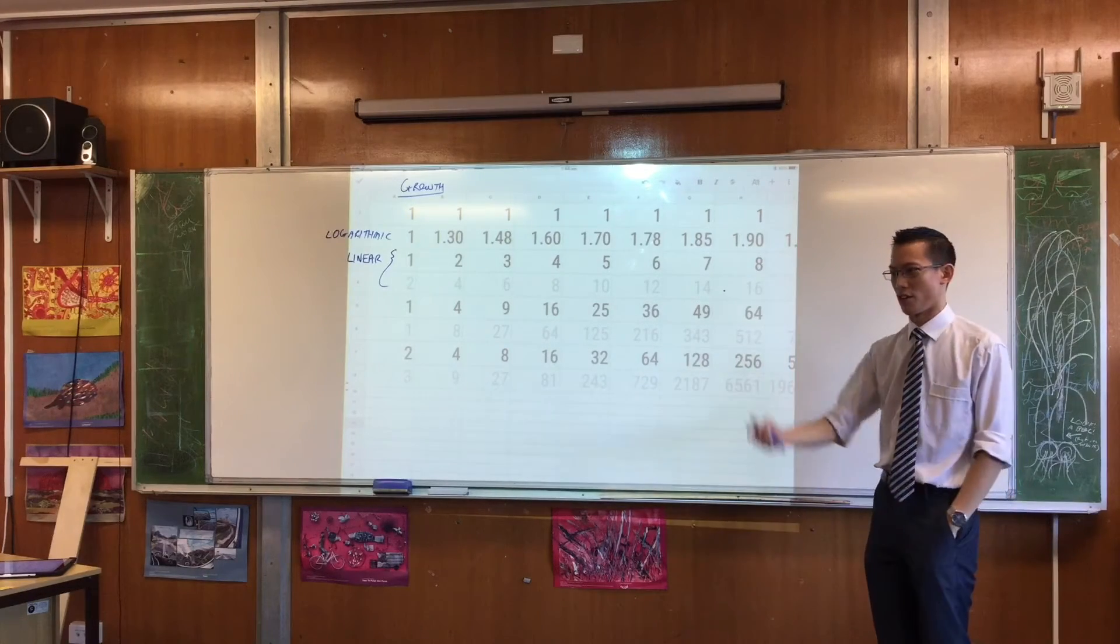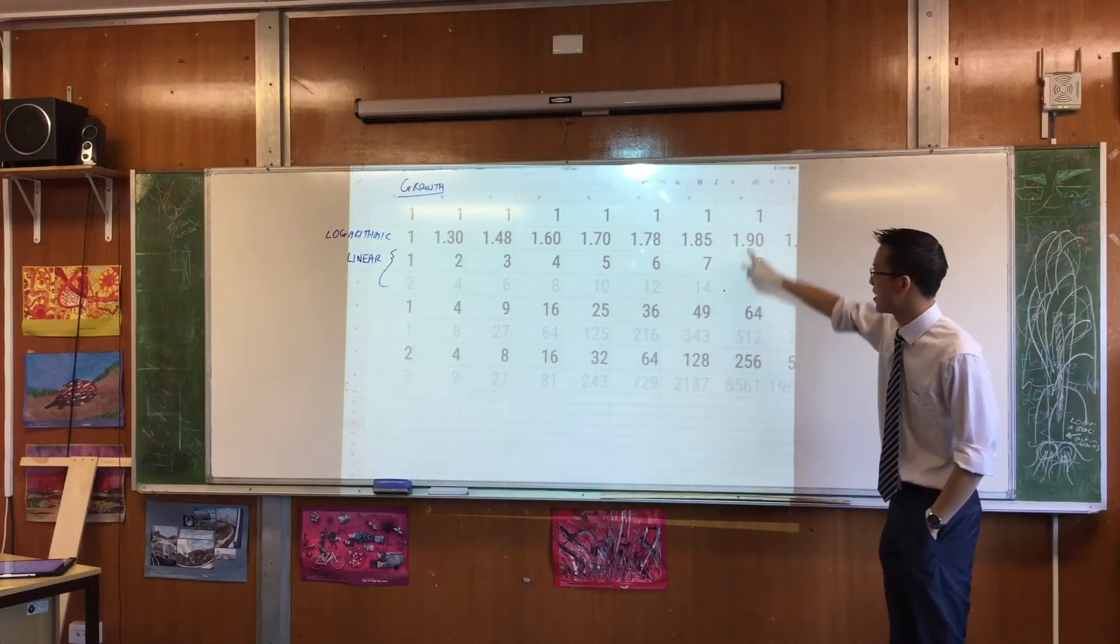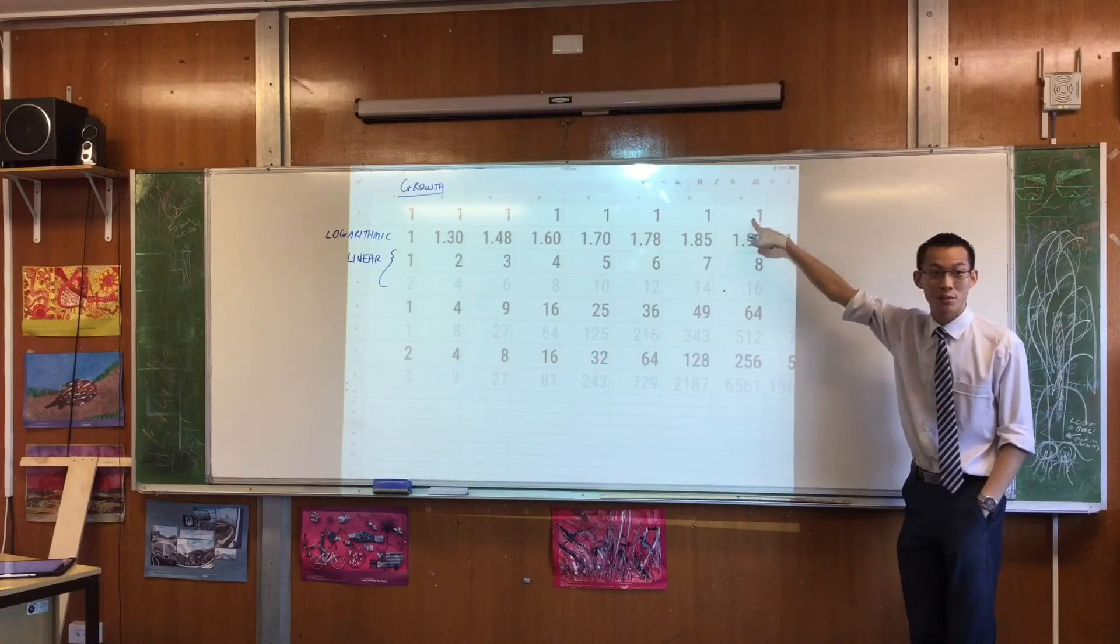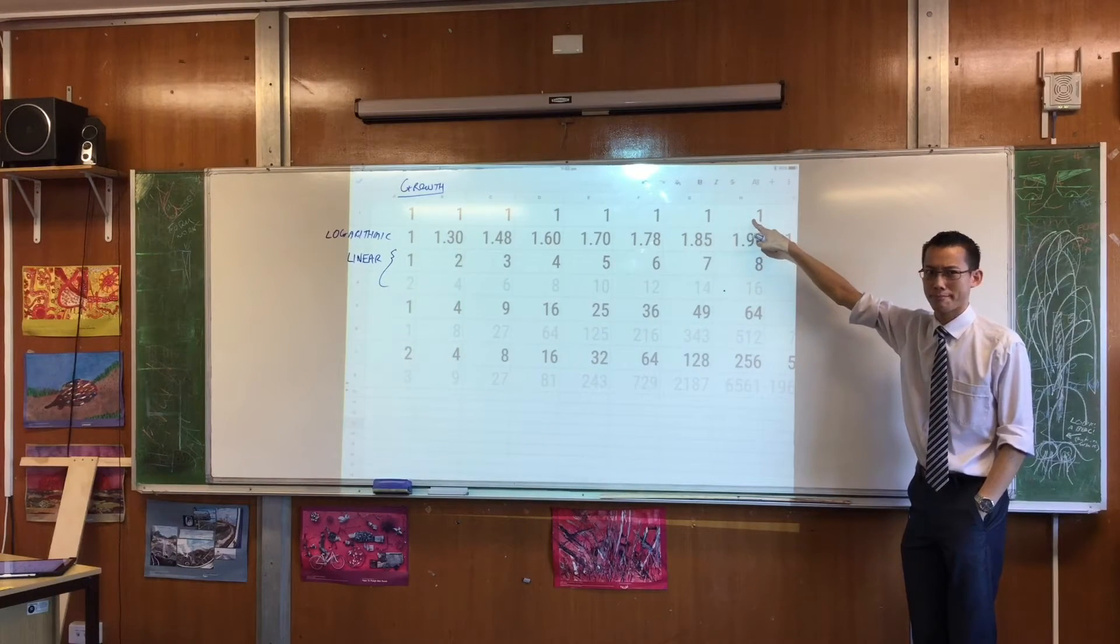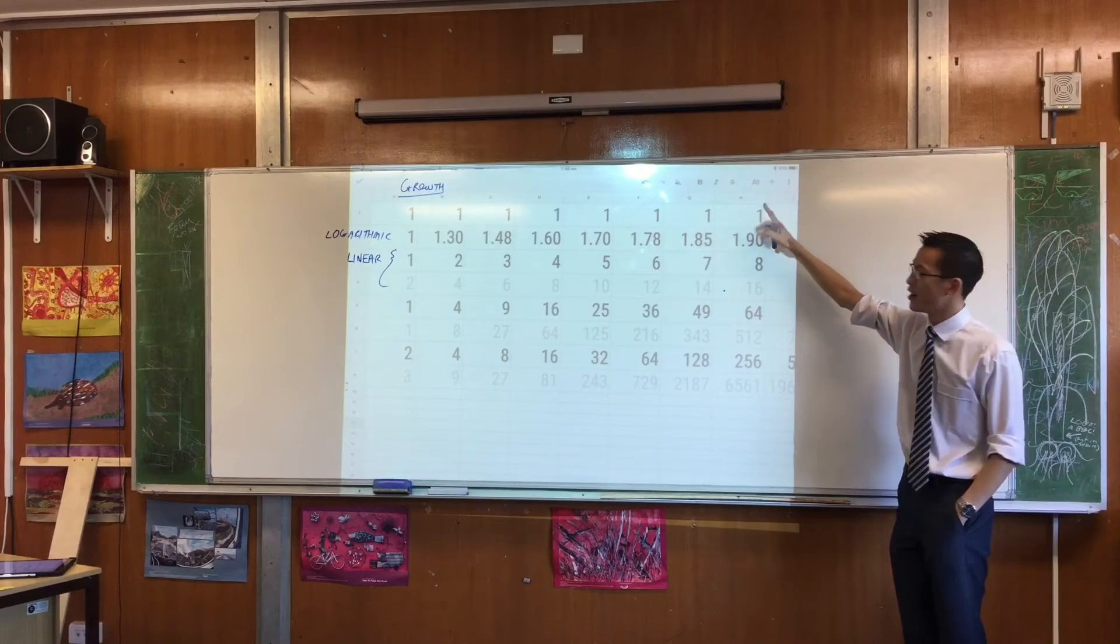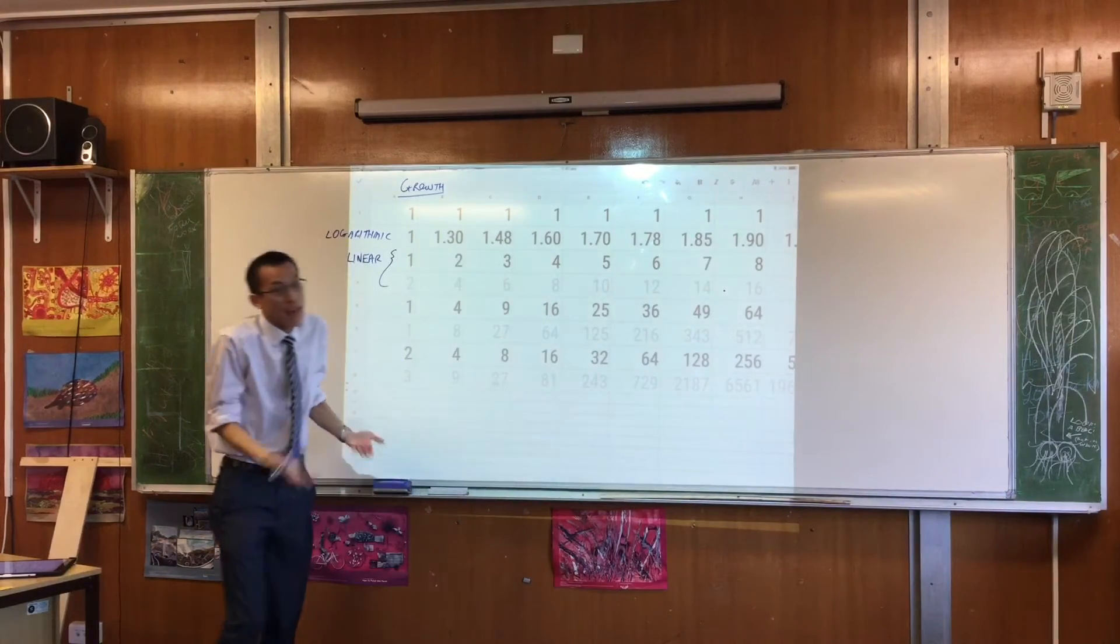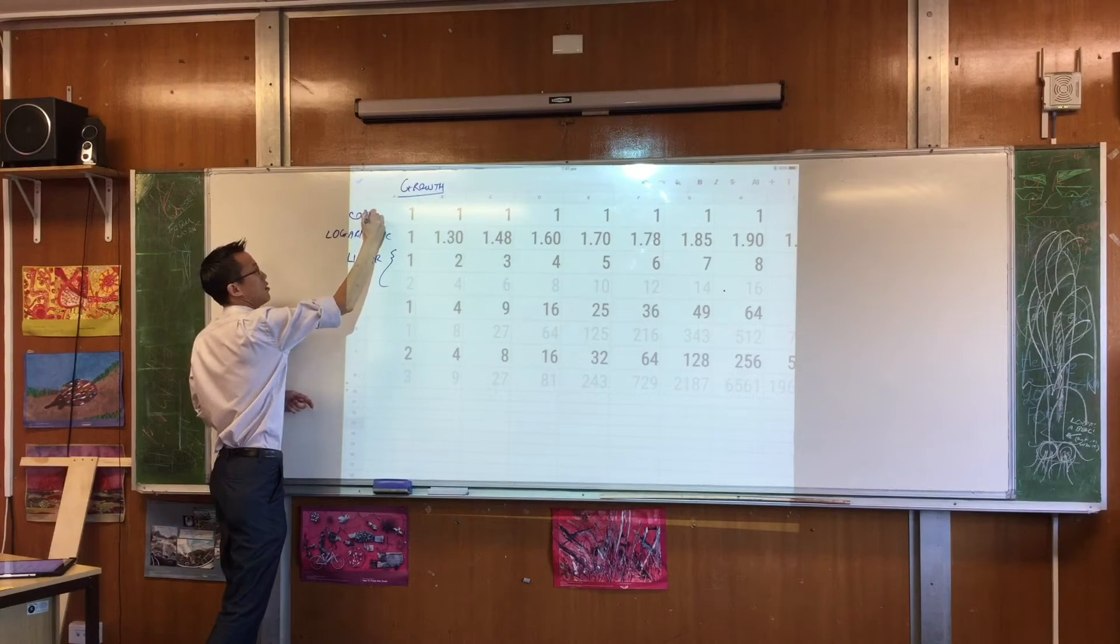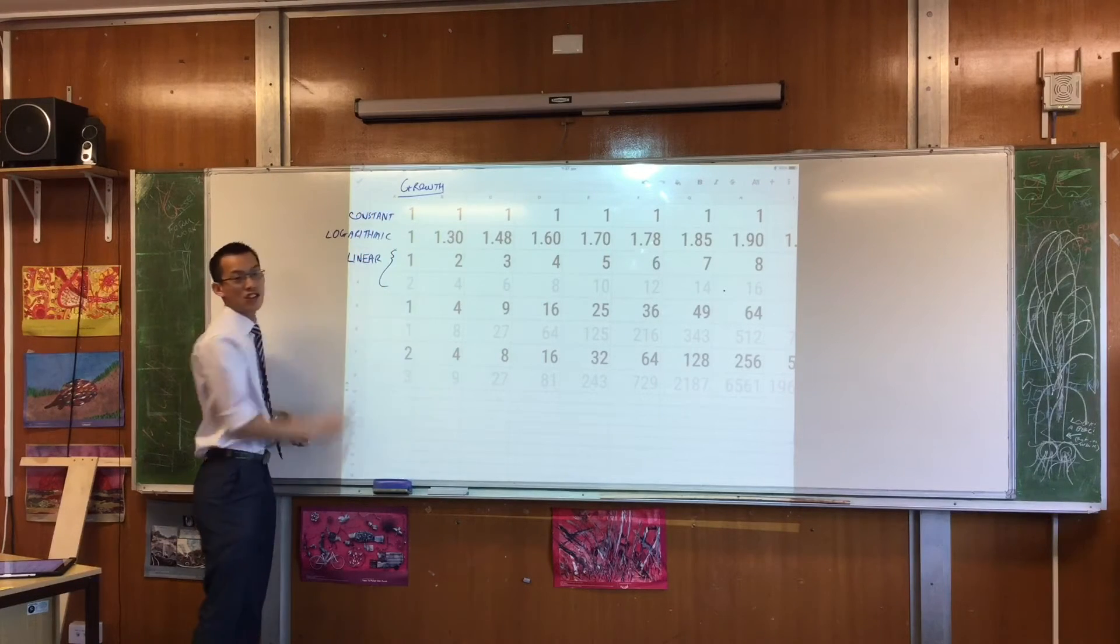Okay? Logarithmic growth. I know it seems a bit silly, but, you know, with science experiments in our minds, you need to control, right? So what is this? What is this row? Is it growing? Answer? No. So the value of this is actually constant. So if you don't have something that's growing, you call it constant because it's not changing at all.